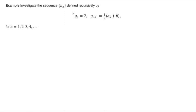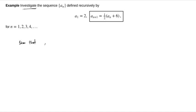In this example, we're asked to investigate the sequence defined recursively by two equations. The recurrence relation is given by a sub n+1 equals one half of the previous term plus 6. So add 6 first and then divide by 2. We want to do two things: show that this sequence converges using the monotone convergence theorem, and once we know it converges, try to find the limit.